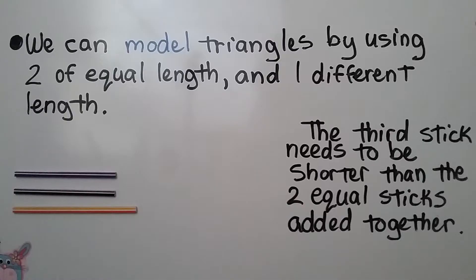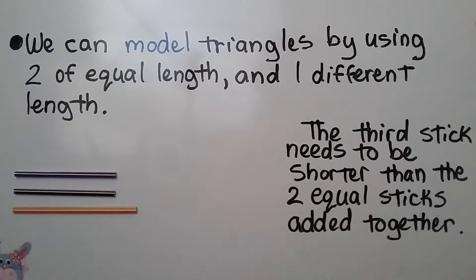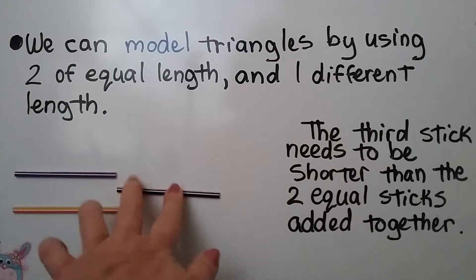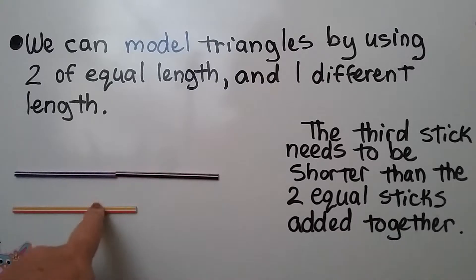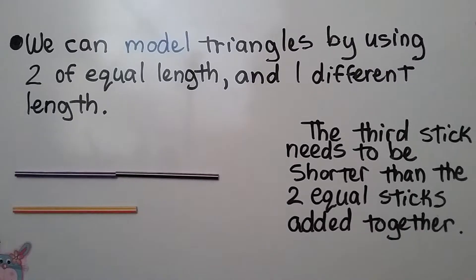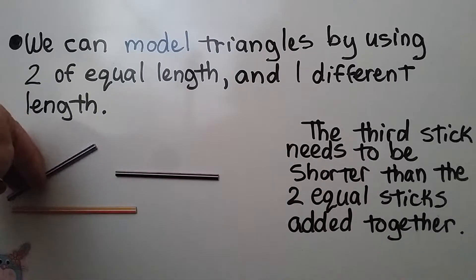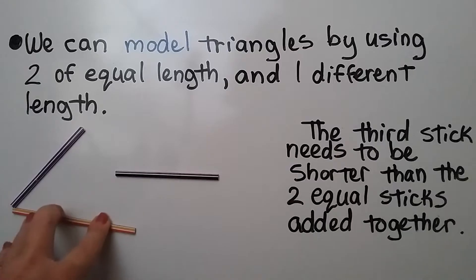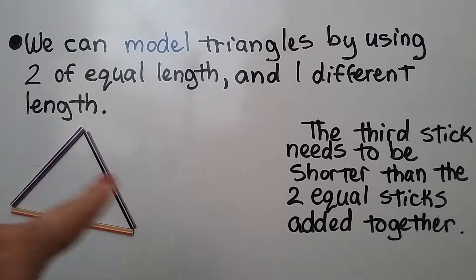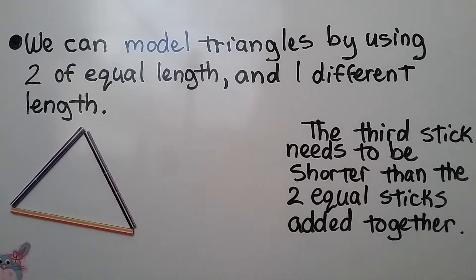We can model triangles by using two sticks of equal length and one different length, but the third stick needs to be shorter than the two equal sticks added together. So if we take the two equal sticks and add them together, our third stick needs to be shorter than both of these together. We can make a triangle with two equal lengths and one of a different length.